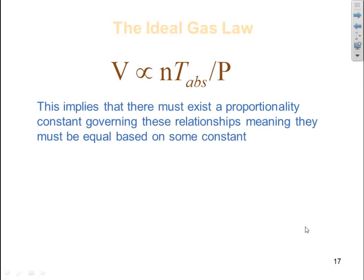This implies that there must exist a proportionality constant governing these relationships, meaning they must be equal based on some constant. So instead of proportional, we can set volume equal to the number of moles of gas times absolute temperature divided by pressure, if we can figure out what is that proportionality constant.